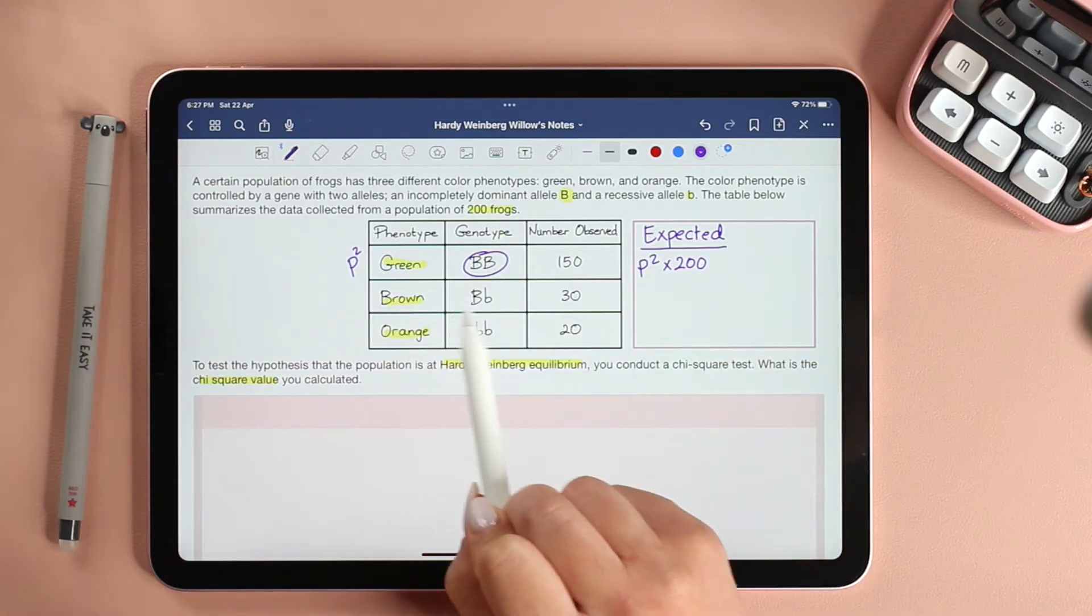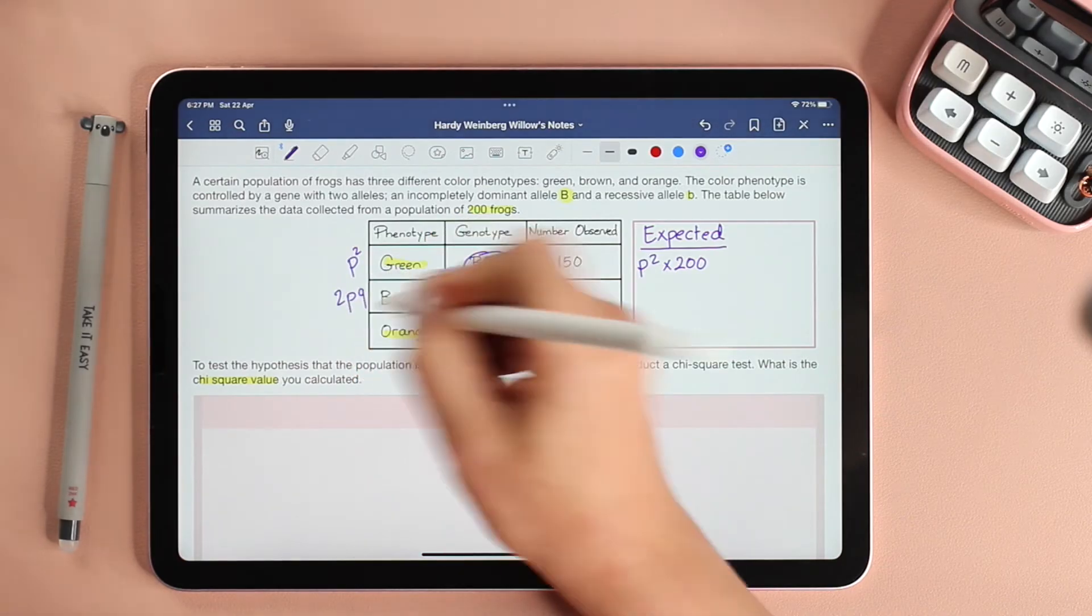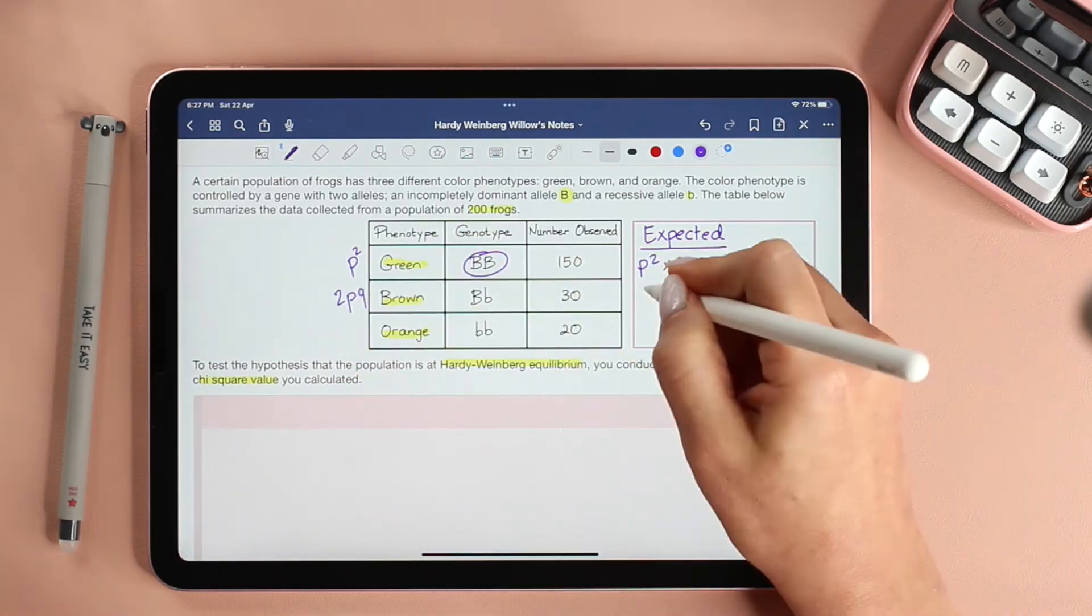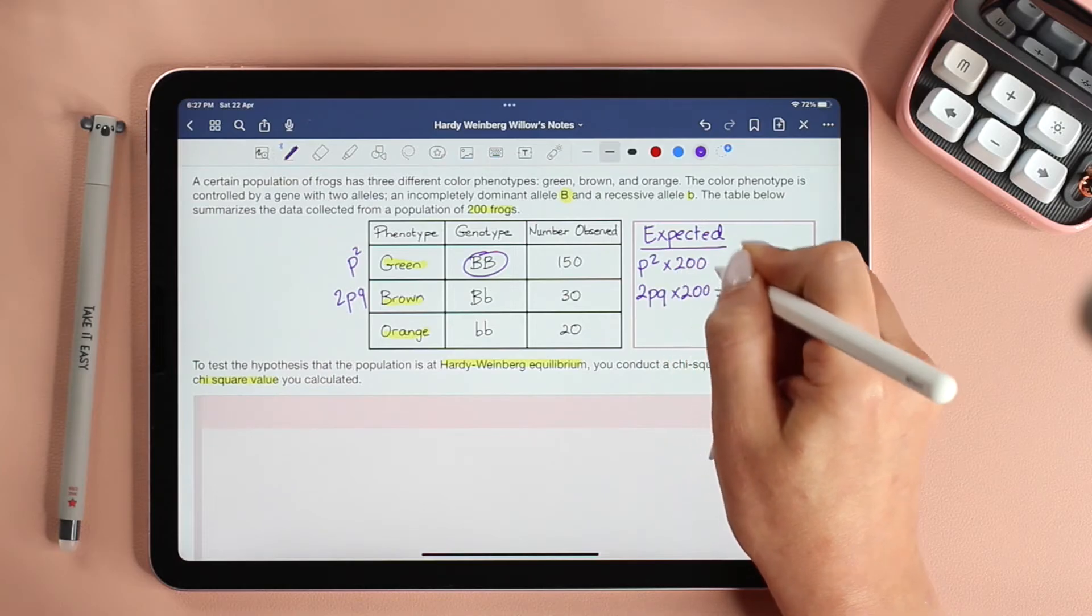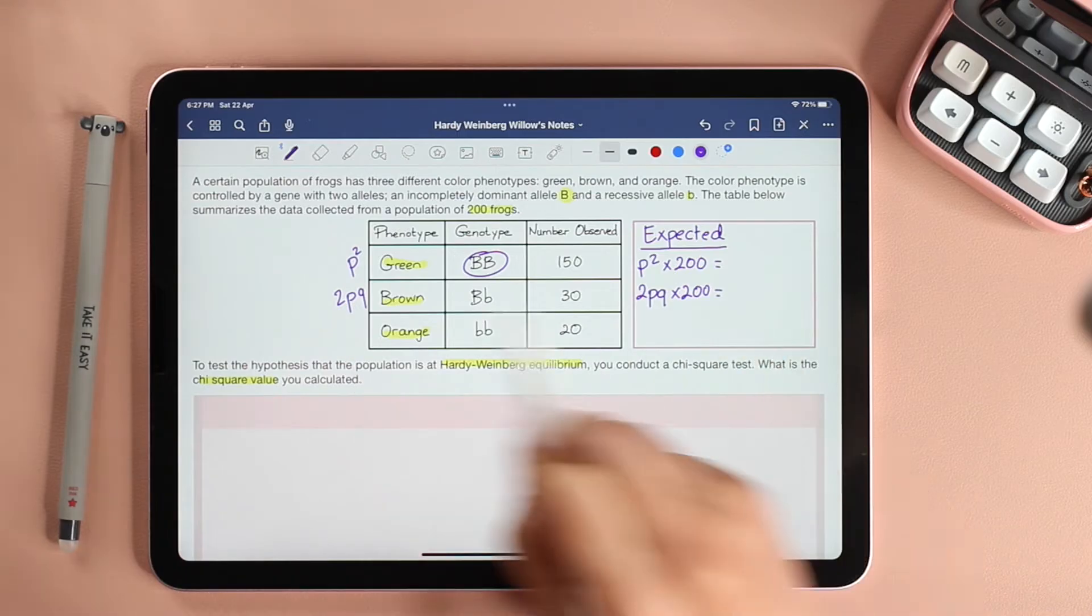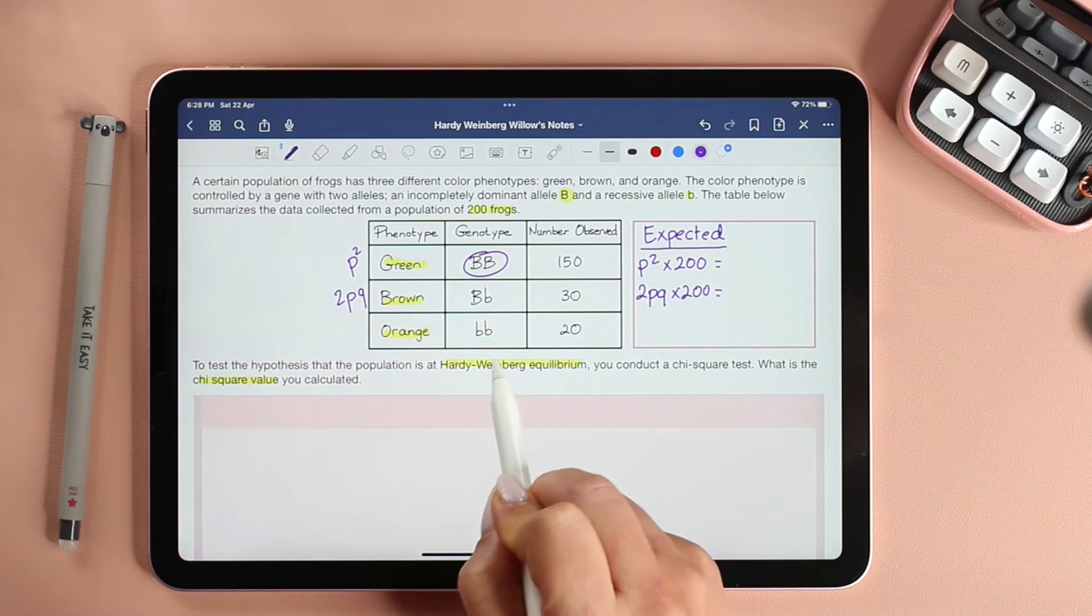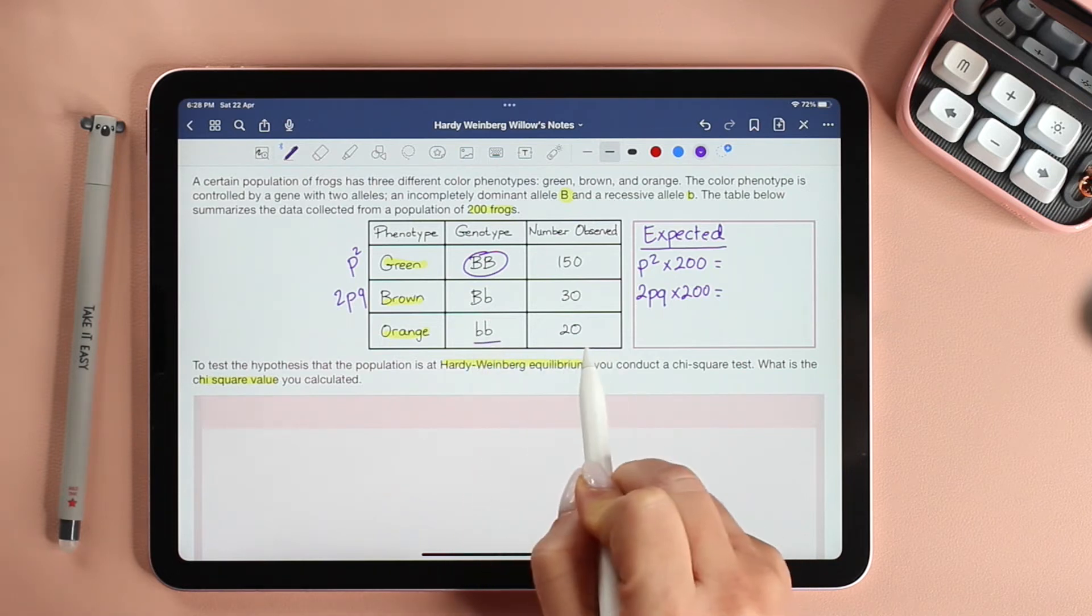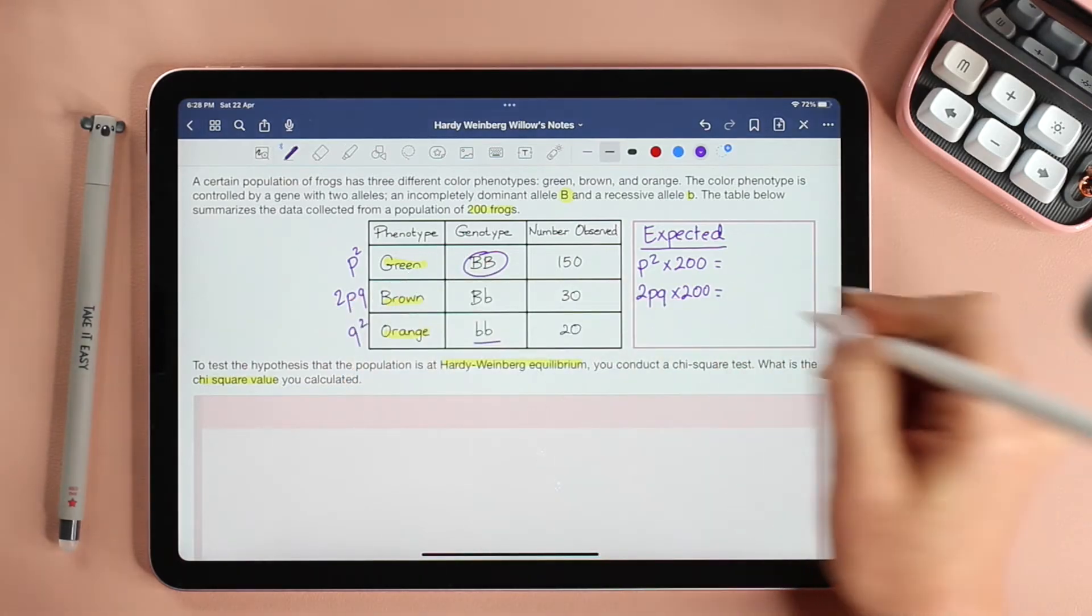Brown being heterozygous is expressed as 2pq. In a very similar way, we're going to say 2pq times 200, and that's going to give me the number of frogs that are brown.